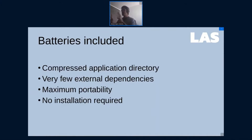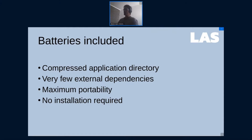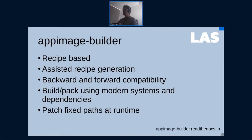An AppImage includes all the batteries — all the stuff that an application might require to run. It has very few external dependencies: only a few graphical libraries, SSL, and the libraries that come in almost every Linux distribution. Some kinds of AppImages include more dependencies than others. AppImageBuilder is one of the tools that includes most things because we are looking for maximum portability, and of course no installation is required.